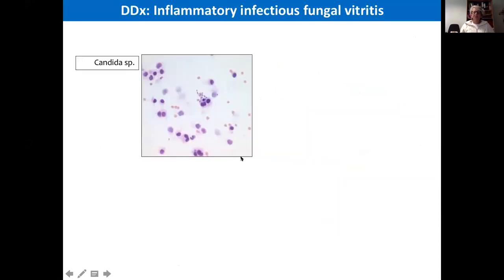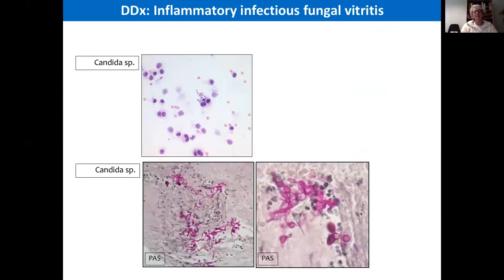The major differential diagnosis for vitreoretinal lymphoma is endophthalmitis, particularly fungal endophthalmitis. Here is an example of Candida — this was in a vitrectomy sample. And this case was taken from a chorioretinal biopsy, in patients who were immunosuppressed as a result of organ transplantation and also, unfortunately, IV drug use.